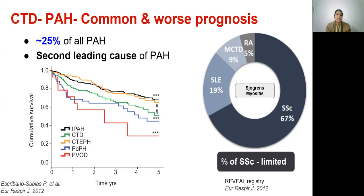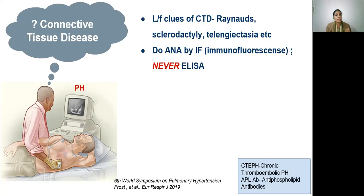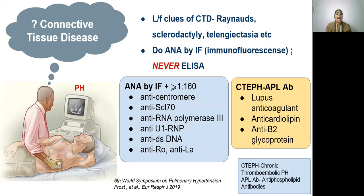To improve the pickup of connective tissue disease, every time pulmonary hypertension is diagnosed, consider the possibility of underlying connective tissue disease. Look for clues such as Raynaud's, sclerodactyly, and telangiectasia. Do ANA by immunofluorescence and never ELISA. The sixth world symposium recommends this panel of antibodies when there is high suspicion of CTD-PAH: anti-centromere, SCL70, RNA polymerase 3, U1-RNP, dsDNA, Ro, and La. If there is suspicion of group 4, that is chronic thromboembolic pulmonary hypertension, anti-phospholipid antibodies need to be looked for.